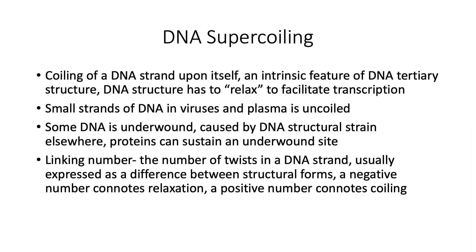There's DNA supercoiling. This is where the DNA strand coils upon itself. This is an intrinsic feature of DNA tertiary structure. The DNA structure has to relax or spread out in order to facilitate transcription. Small strands of DNA in viruses and in plasmids are uncoiled. Some of this DNA is underwound, caused by DNA structural strain elsewhere, and proteins can sustain an underwound site. The linking number is the number of twists in a DNA strand, usually expressed as a difference between structural forms. A negative number connotes relaxation, a positive number connotes coiling.